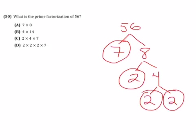So now we just take these four numbers and we write it as a multiplication problem. 2 times 2 times 2 times 7. And when you multiply 2 times 2 times 2 times 7, you'll get back to 56. And we know we're done because 2 and 7 are both prime numbers.